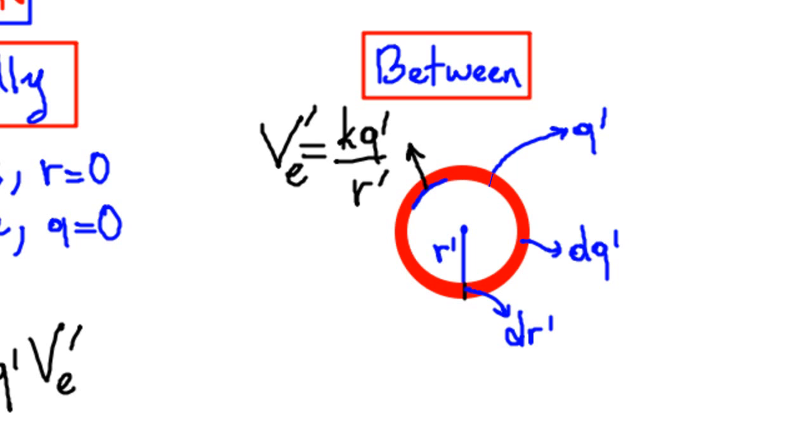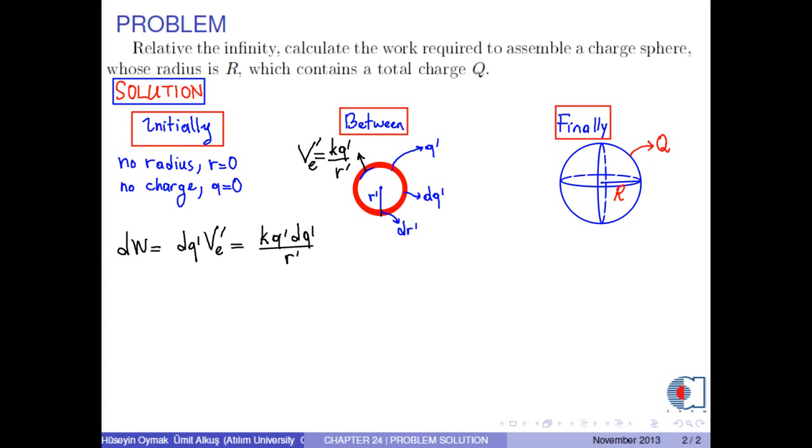Therefore, we have dW as k times q' times dq' over r'.